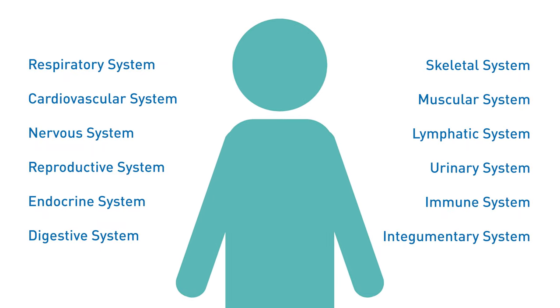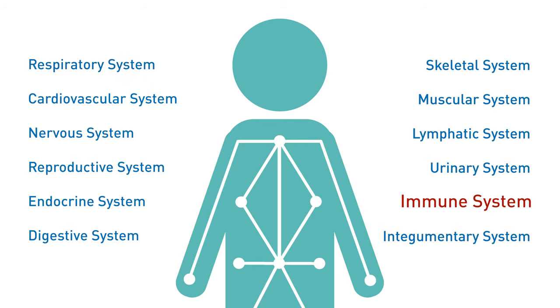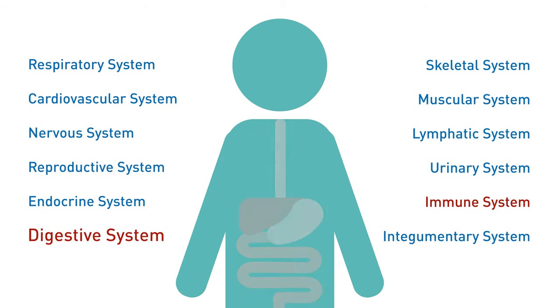For example, researchers from 21 countries are working on the respiratory system, 26 countries are focusing on the immune system, and 25 countries are mapping the digestive system.